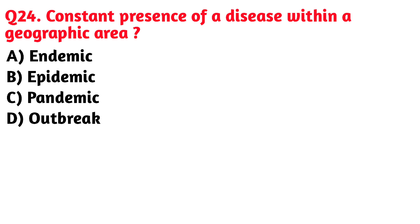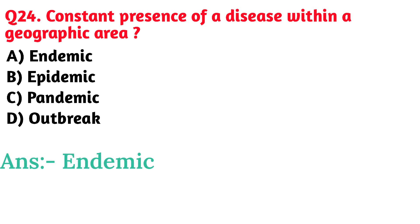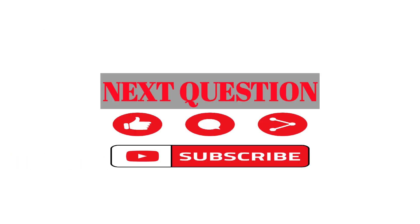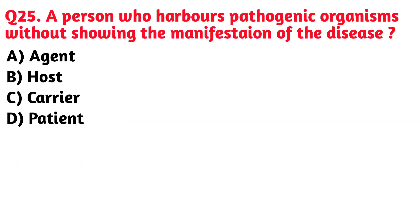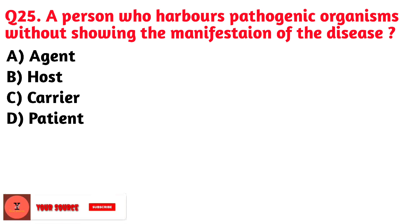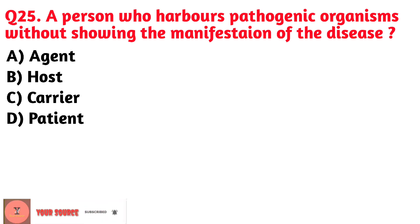Next question: Constant presence of a disease within a geographic area. Option A. Endemic is the correct answer.